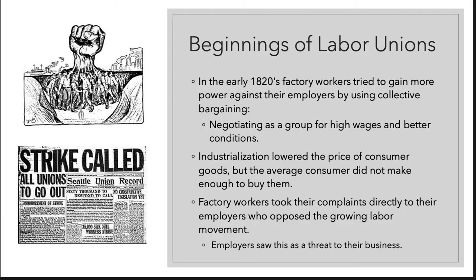Because of these conditions, rumblings of labor unions began. In the early 1820s, during the first industrial revolution, factory workers tried to gain power against their employers using a tactic called collective bargaining — collective meaning a group, bargain meaning negotiate. What were they negotiating for? Higher wages and better working conditions — the story of every union. Industrialization lowered the prices of consumer goods through mass production, but the average consumer, the factory worker, didn't make enough to buy them.